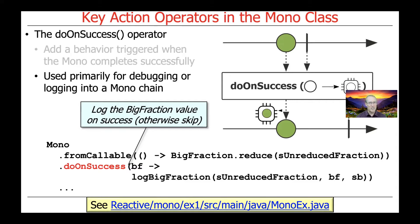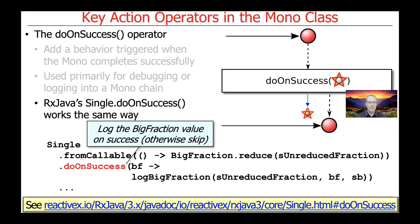When we take a look at the example, which is in the link at the bottom of the slide, you'll get a chance to see how this works, and if you want to run the example, you can see what the output is going to be. It's a way of transparently intercepting the value and then having a side effect of, in this case, logging it. Not surprisingly, RxJava has a doOnSuccess action operator as well, and it works exactly the same as the one in Project Reactor.